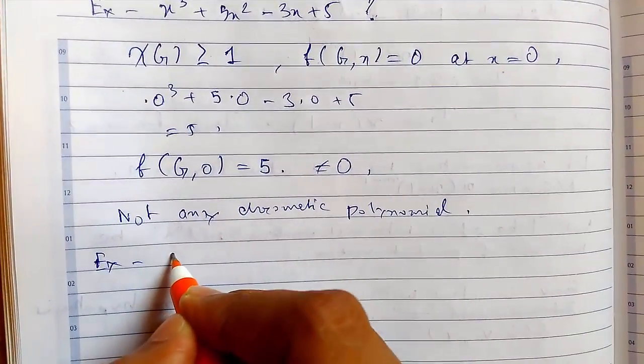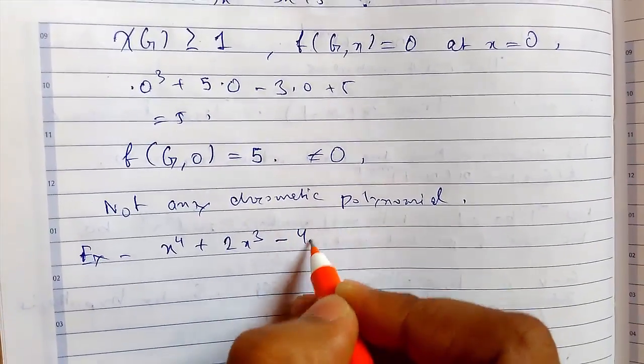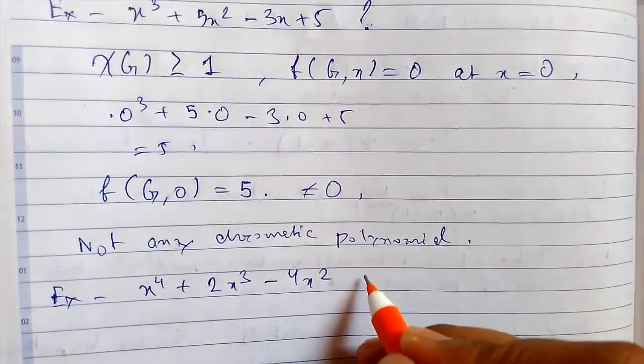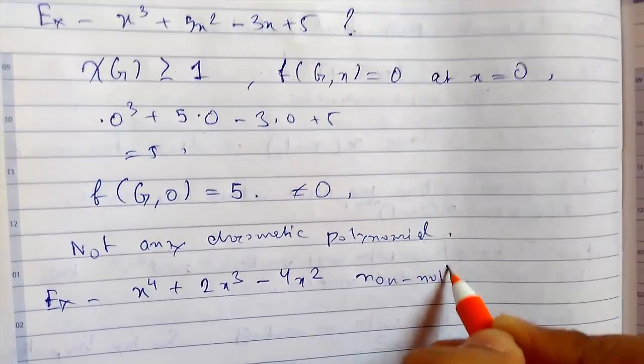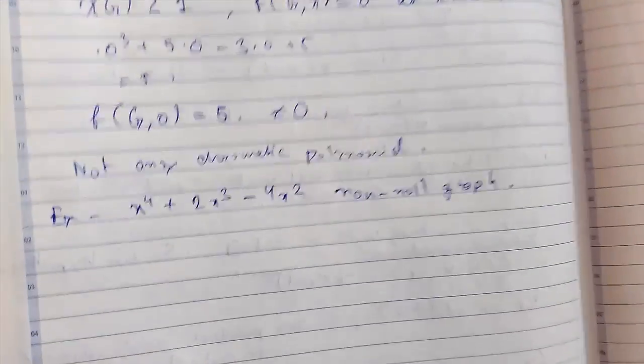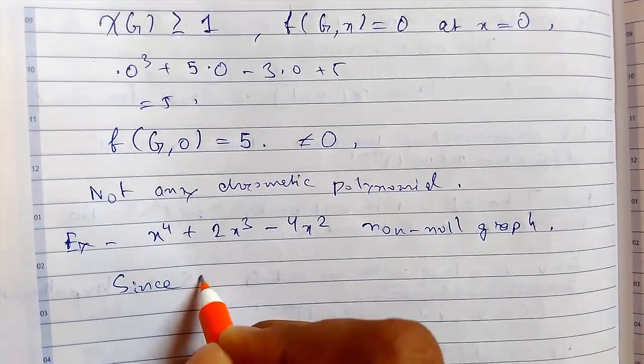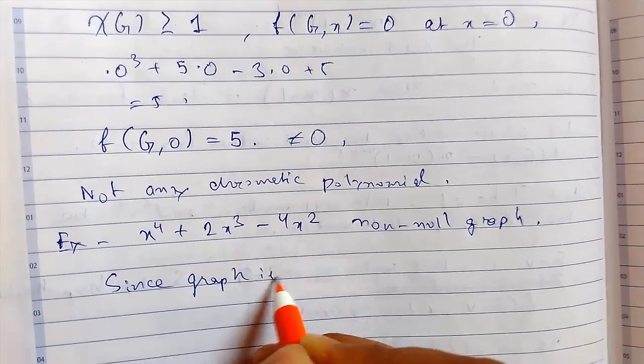Again we need to check whether it is chromatic polynomial of non-null graph. So this was for any graph, this was non-null graph. So since graph is non-null...